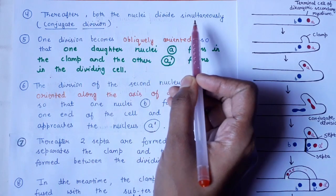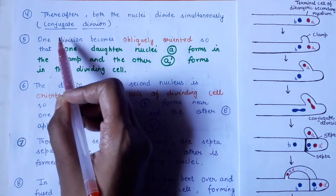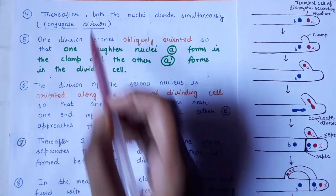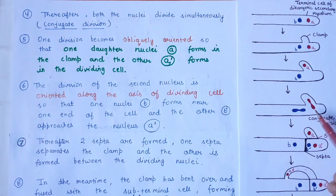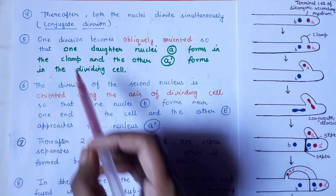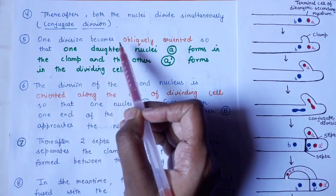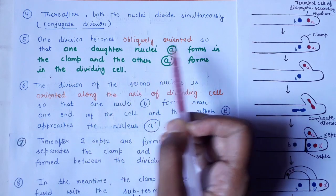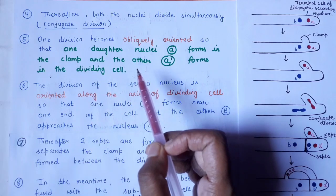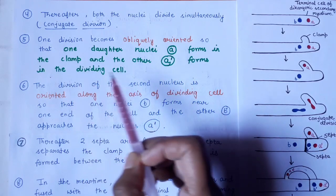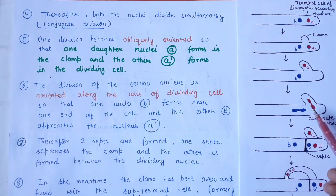Both nuclei are divided simultaneously, and we call this conjugate division. One division becomes obliquely oriented. So one daughter nucleus A forms in the clamp, and the other daughter nucleus A' forms in the dividing cell. The red nucleus division is obliquely oriented.